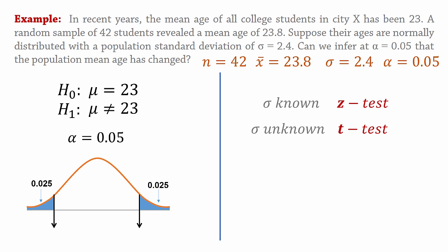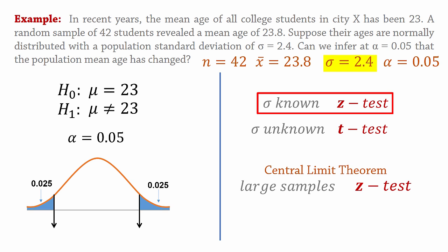In some courses however, due to the central limit theorem, whenever the sample size is large, and some textbooks say when n is at least 30, apply the z-test whether the population standard deviation is known or not. The onus is on you to check what obtains in your course. For this example, we will conduct a z-test because the population standard deviation sigma is given.